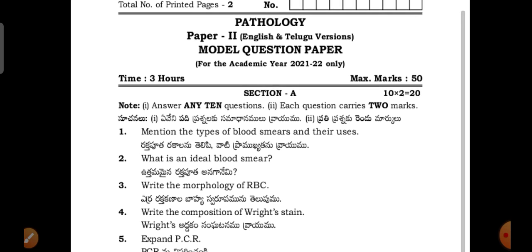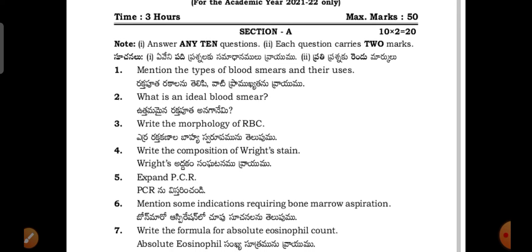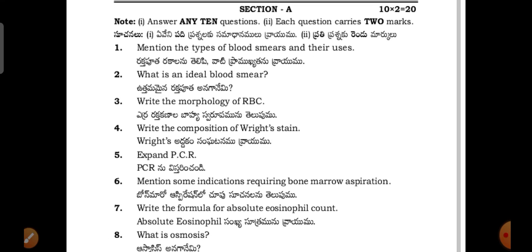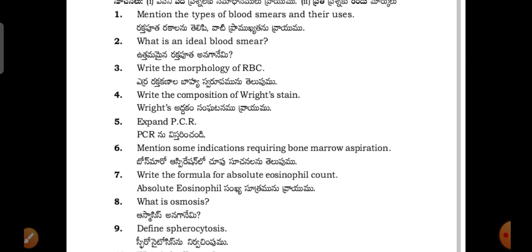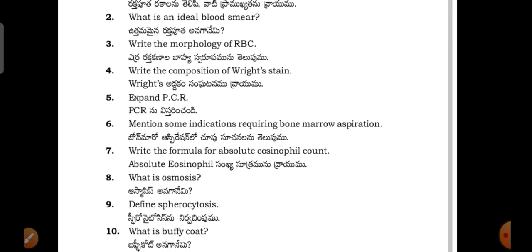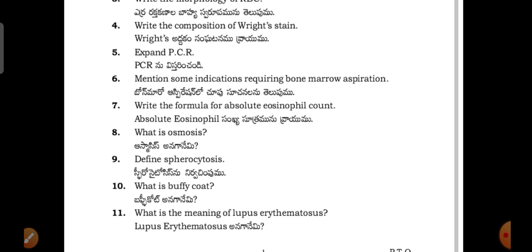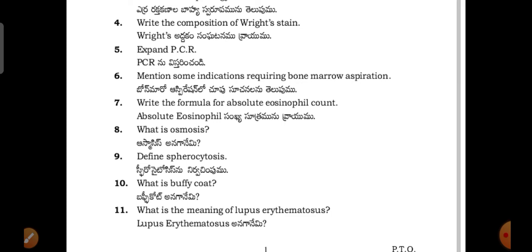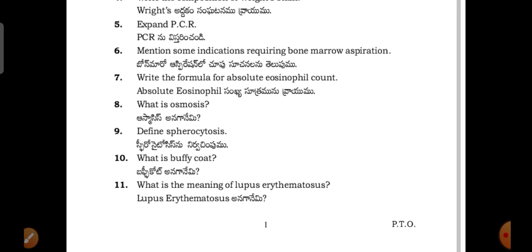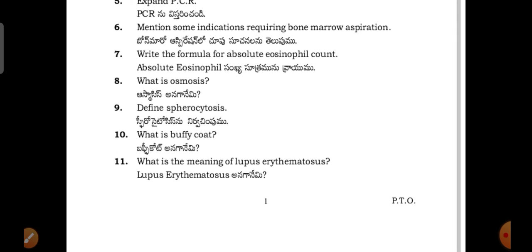Let's see the pathology question paper for MLT second year students. Questions include: mention the types of blood smears and their uses; what is an ideal blood smear; what is the morphology of RBC; write the composition of Leishman stain; complete blood picture (CBP); mention some indications requiring bone marrow aspiration; write the formula for absolute eosinophil count.